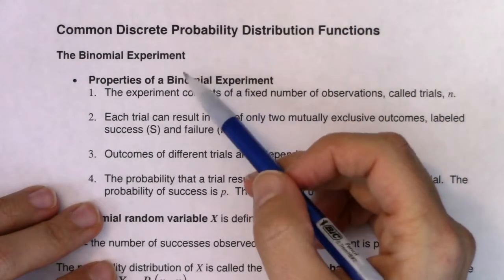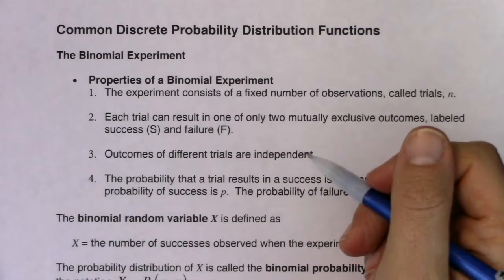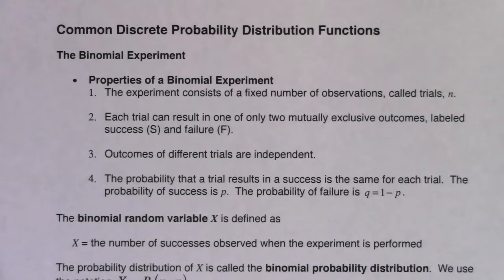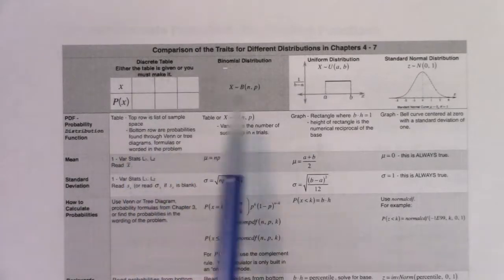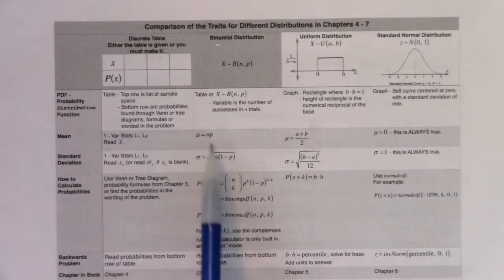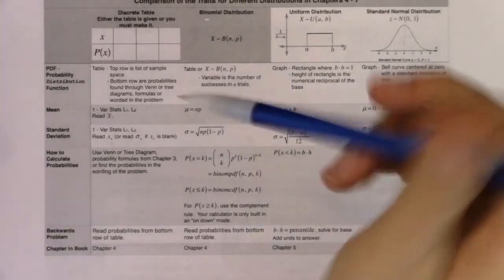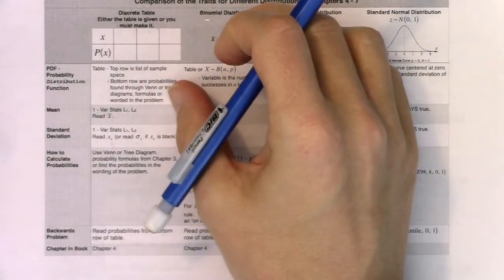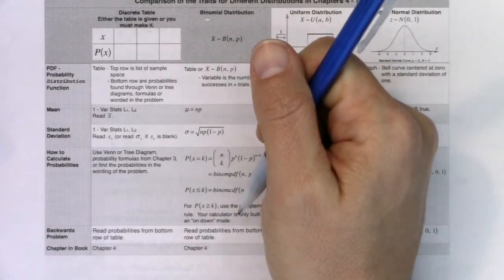Here's what it takes to be in a binomial experiment. There are four properties — you have to check through each of them and say yes, all four have been met. When you recognize you're dealing with a binomial distribution, you get these nice shortcut formulas. The toughest part is recognizing you're in a binomial distribution — that's always the catch.